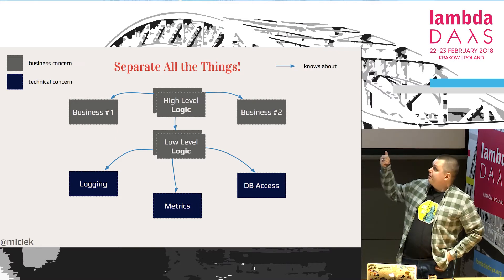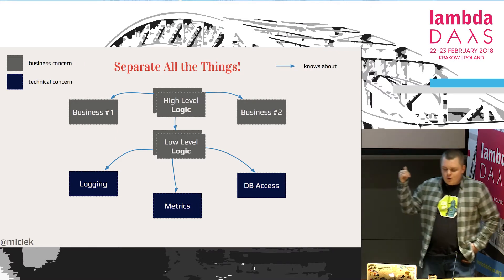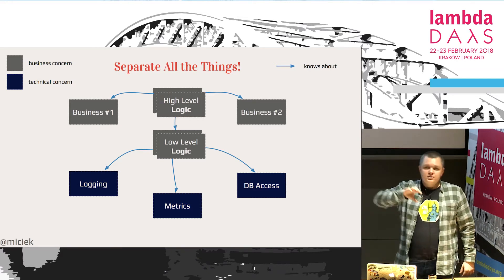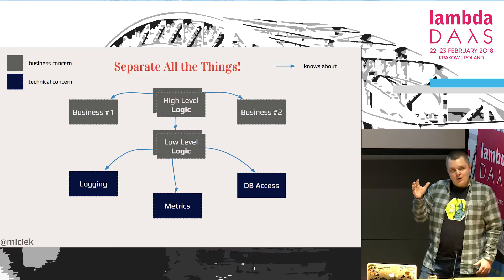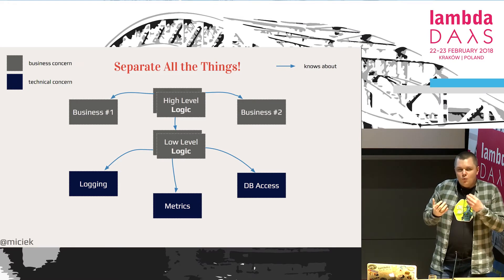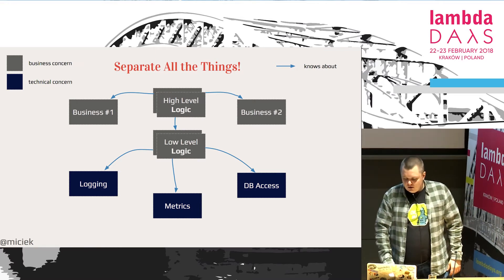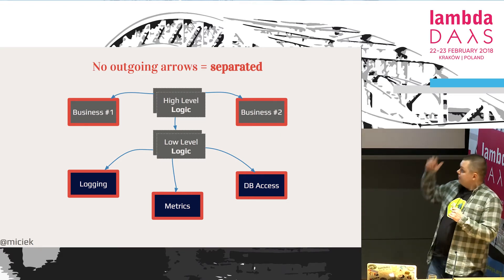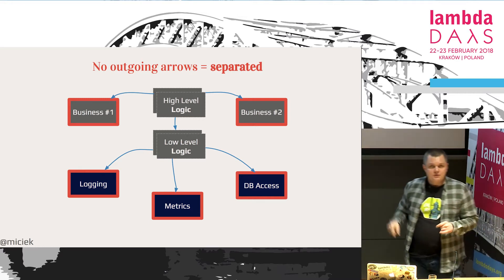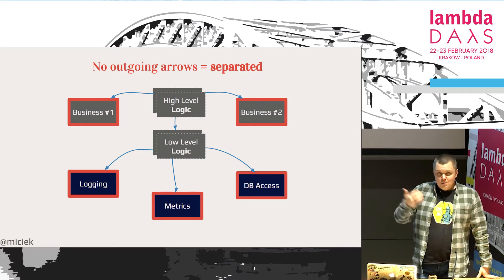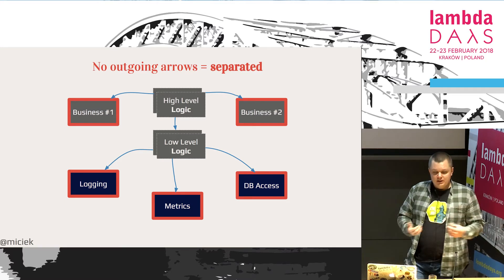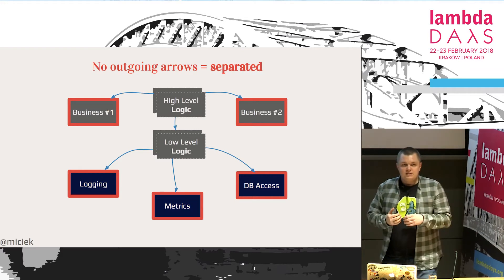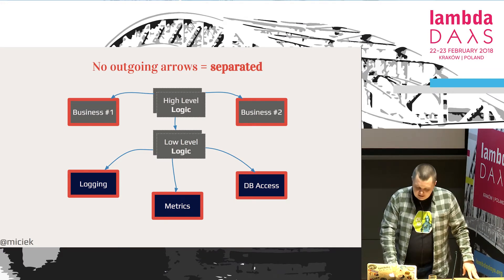I'll be using a diagram throughout the whole presentation where the blue ones are technical concerns and the gray ones are business concerns. This little arrow means one component knows about the other one. What we are aiming for is separation of concerns — that means no outgoing arrows at all. In the diagram, components with a red border don't know about anything more than themselves, so they are truly separated. This is kind of a holy grail for us — we want as many concerns as possible to have no outgoing arrows at all.